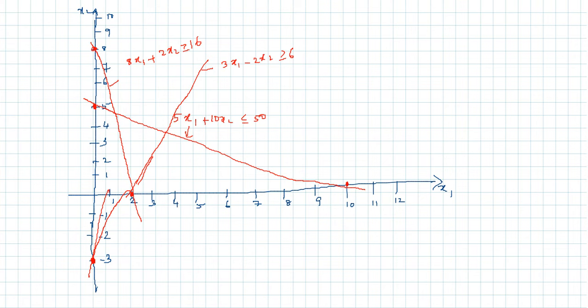Now we identify the feasible region. For the first line, 5x1 + 10x2 ≤ 50, take the test point (5, 2): 25 + 20 = 45, which is ≤ 50, so the feasible region is downward, as indicated by the arrow. For the second line, 8x1 + 2x2 ≥ 16, take point (1, 4): 8 + 8 = 16, which satisfies ≥ 16, so the feasible region is the upward region.